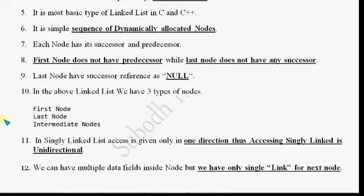We cannot move bidirectionally, we cannot access elements in both directions. The last point is: we can have multiple data fields inside a node, but we have only a single link for the next node.